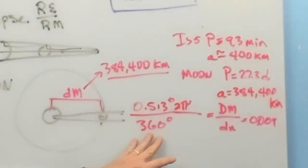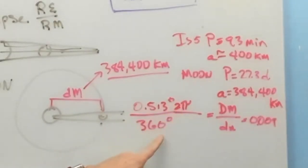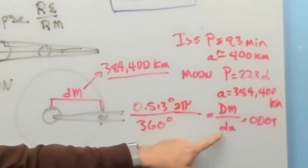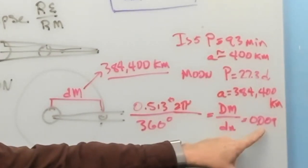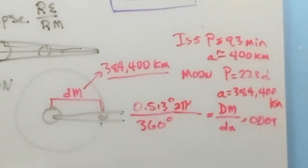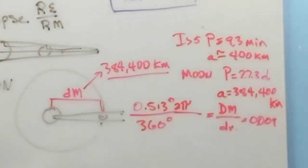384,400 kilometers is the average distance from the earth to the moon. So, here's our rewritten formula. 0.513 times 2 pi over 360 equals the diameter of the moon over the distance to the moon. And if you do the math, it's 0.009 is the ratio. So, if we can figure out the distance from the earth to the moon and multiply it by 0.009, we can come up with the diameter of the moon.